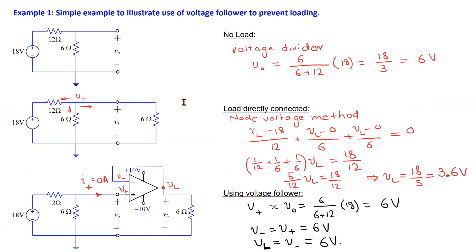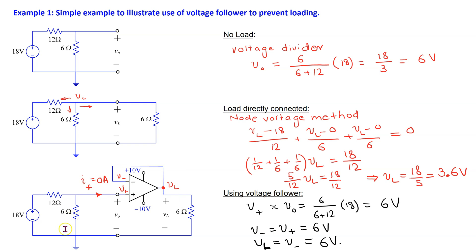Let us consider a simple example to illustrate the use of a voltage follower to prevent loading. Consider a source circuit which produces an output voltage of 6 volts under no-load condition. When a 6 ohm load resistor is directly connected to the source, the output voltage of the source drops to 3.6 volts. However, if we use a voltage follower between the source and the load, then the load does not disturb the source and the output voltage remains 6 volts.